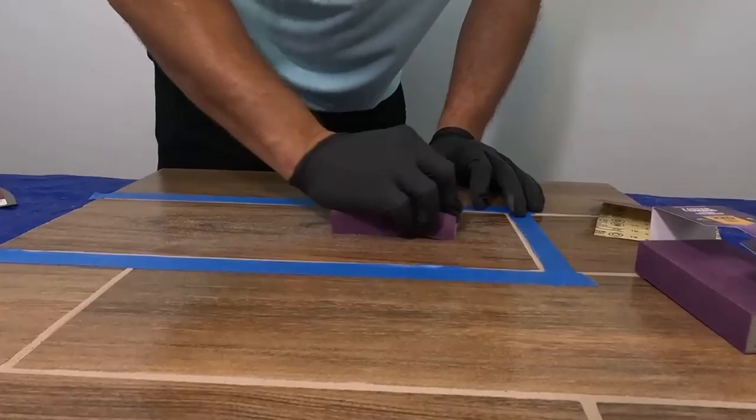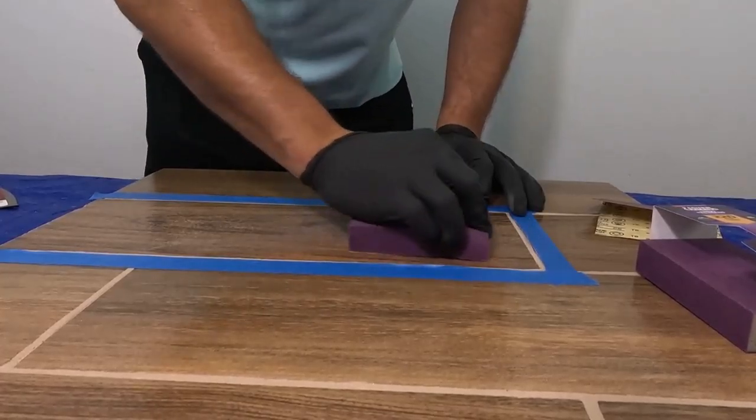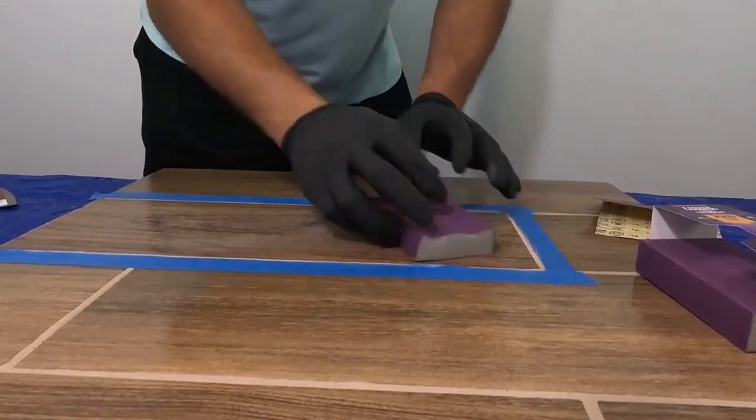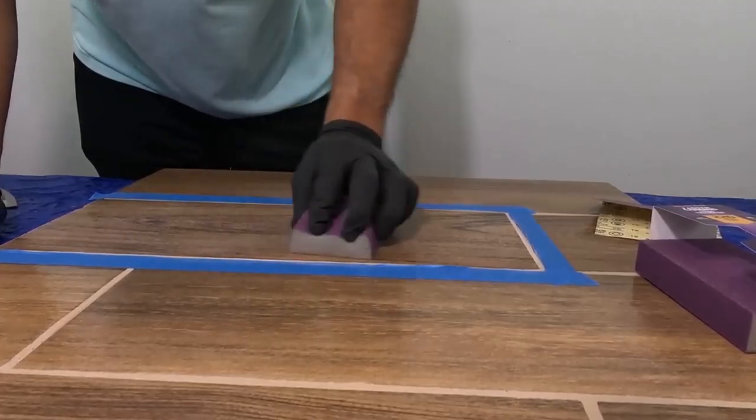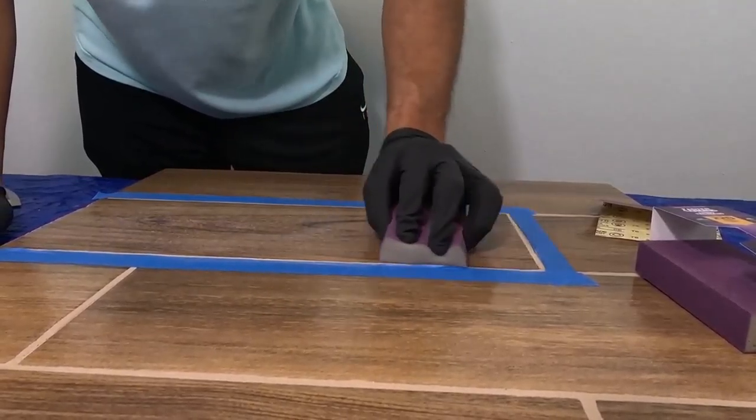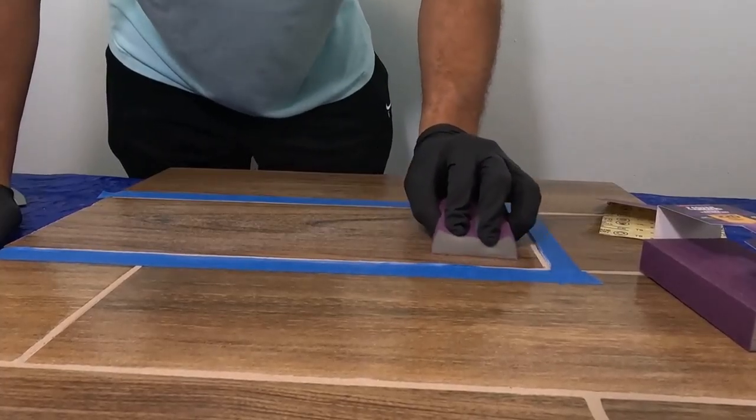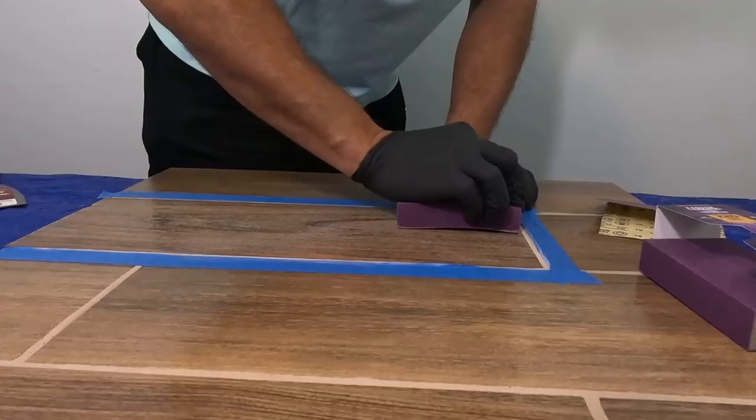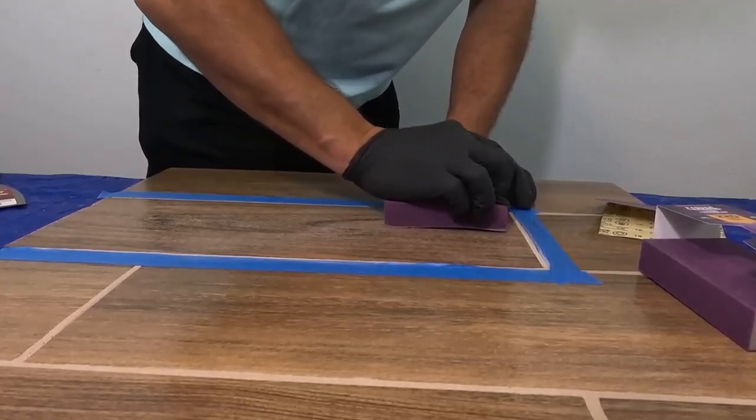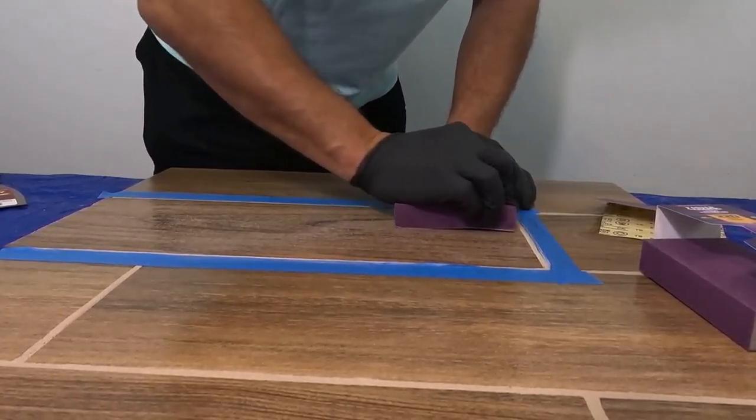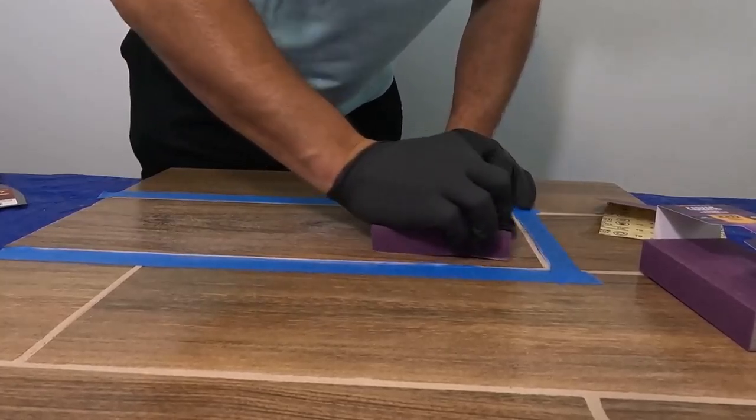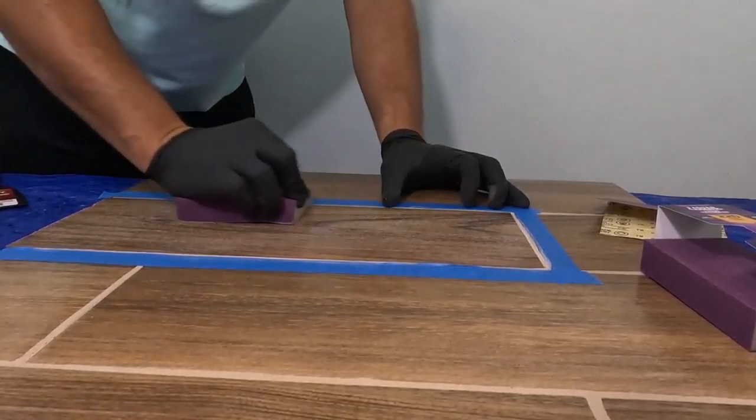If you're just dulling the area down, use 400 grit. Anything we're going to coat over needs to be dulled down and scuffed up with sandpaper. The surface needs to be dull, clean, and dry when we coat over it.